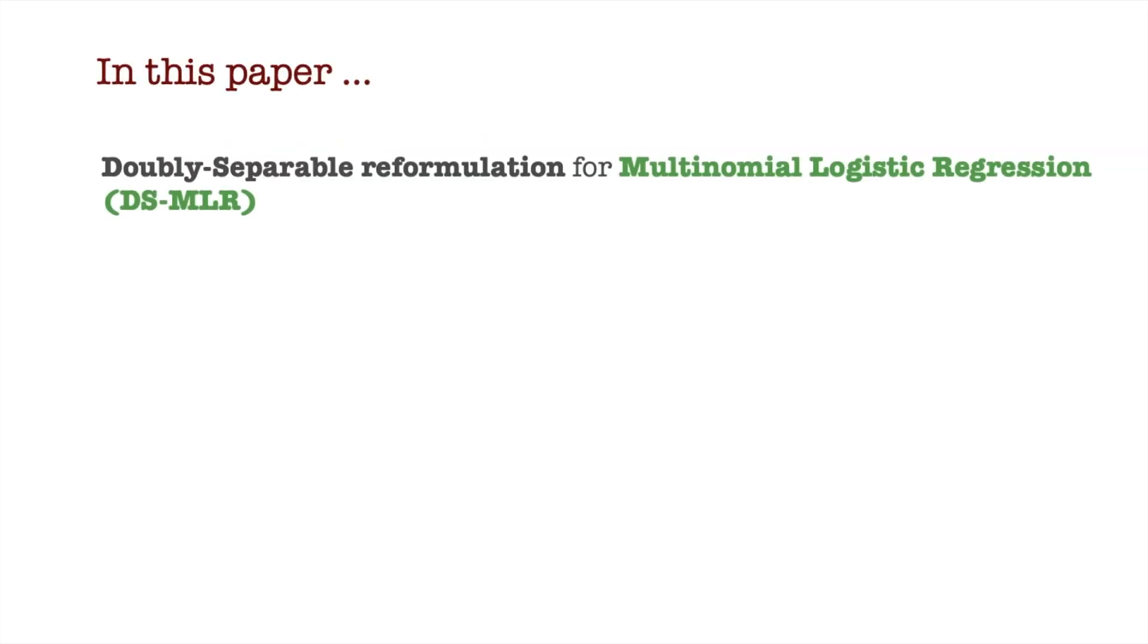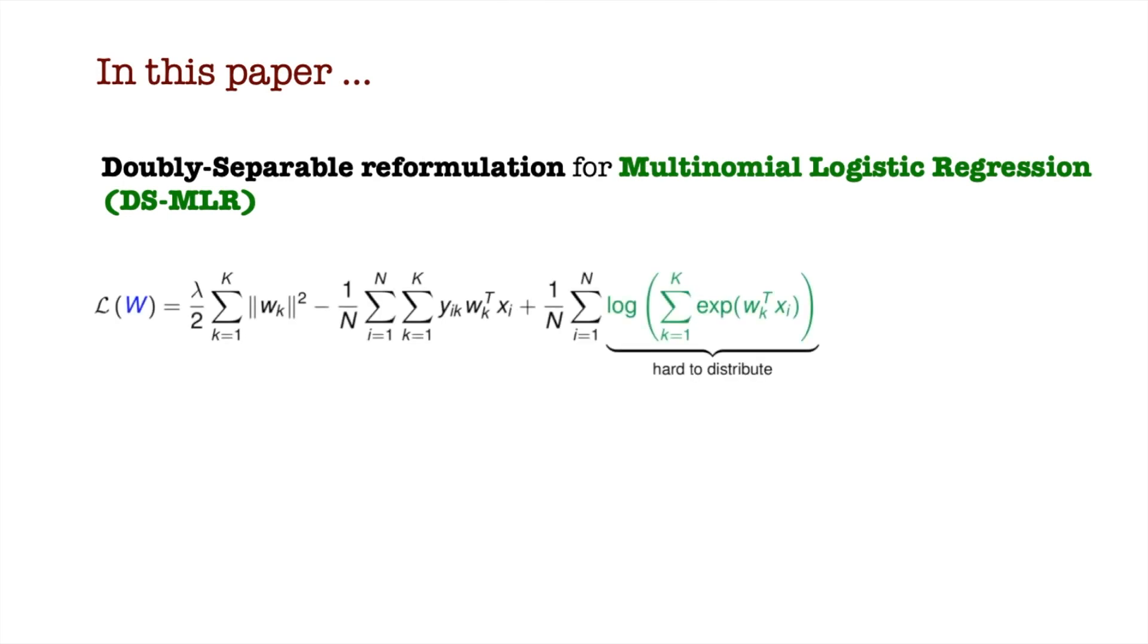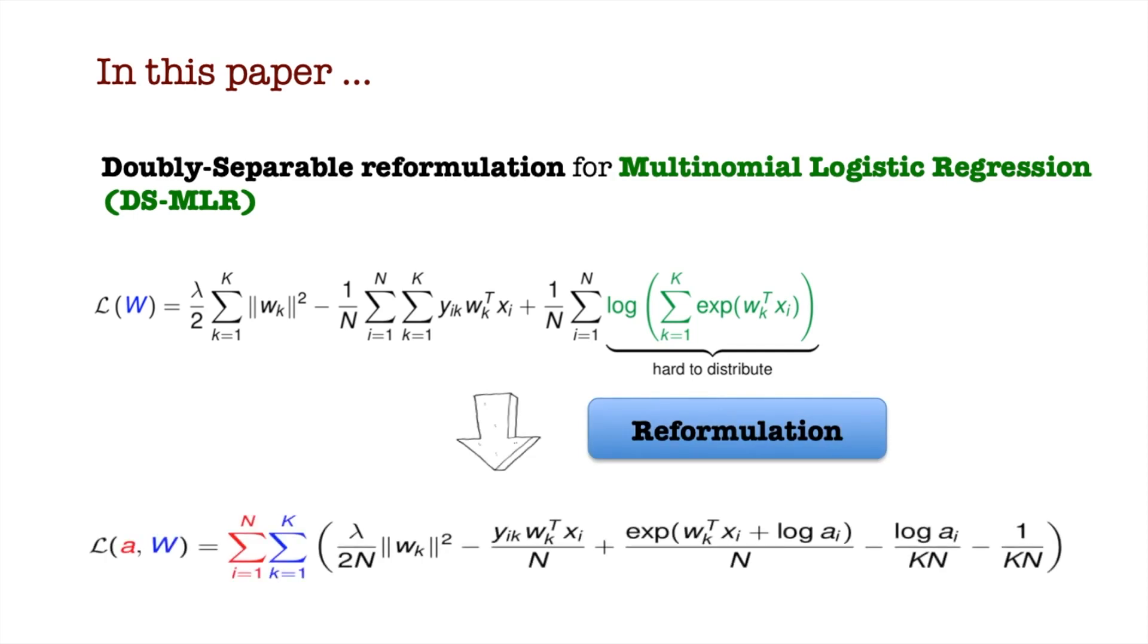In this paper, we propose DSMLR, which is a reformulation to make multinomial logistic regression doubly separable. The original objective contains a log partition function which makes model parallelism hard. We reformulate this into a doubly separable structure by introducing auxiliary local variables.